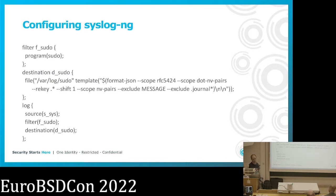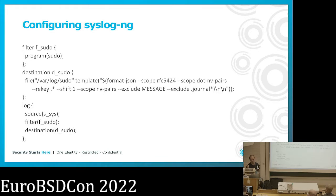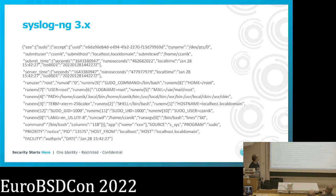Let's look at a slightly different syslog-ng configuration. We keep the same filter and log path, but change the file destination to JSON formatting where we include all syslog-specific fields and also name-value pairs in the log message. What you don't see on screen is that syslog-ng parses sudo log messages automatically out of the box — you don't have to enable any parsers yourself, it is done automatically. When you store the parsed log messages, you see a nice long JSON-formatted log message with all the fields from the sudo log and from the syslog header.